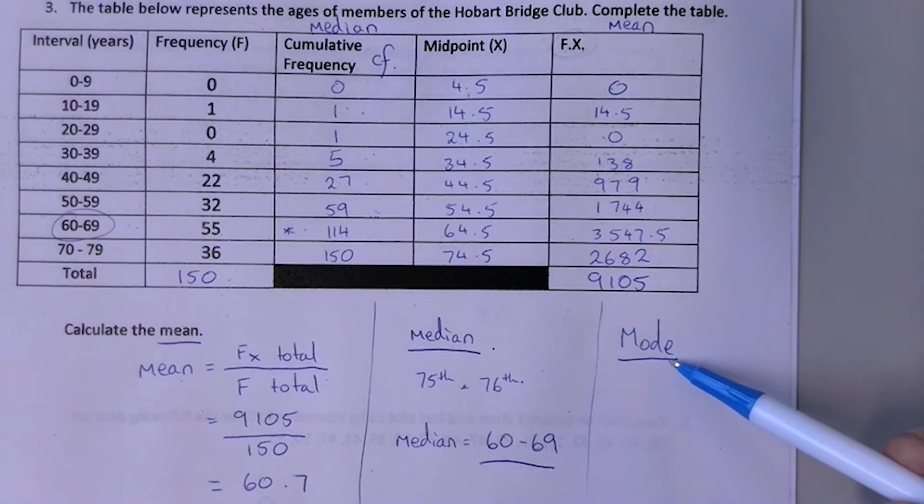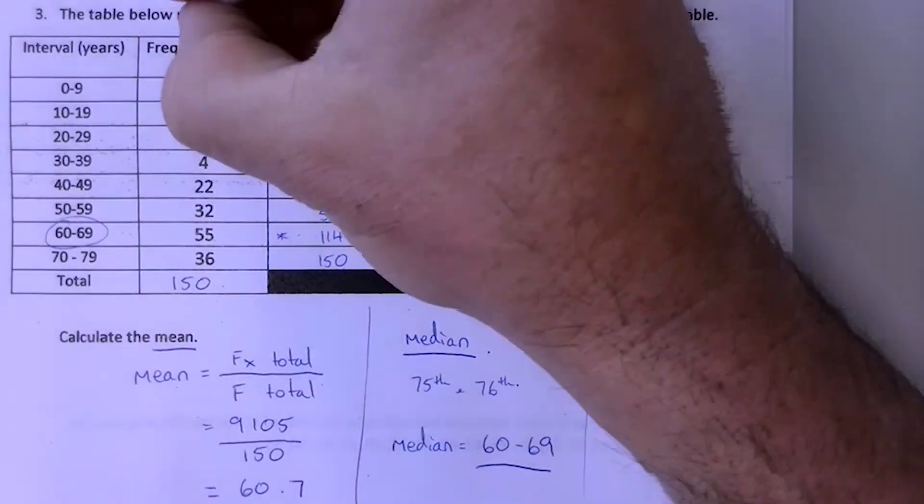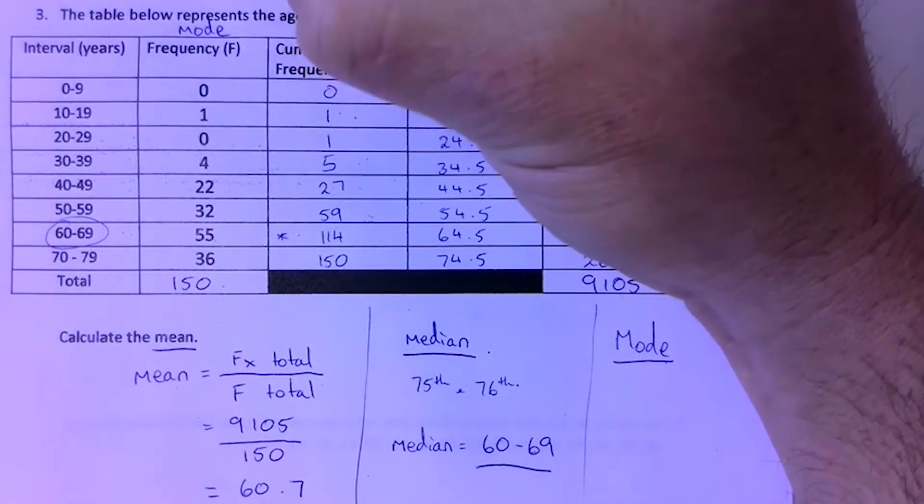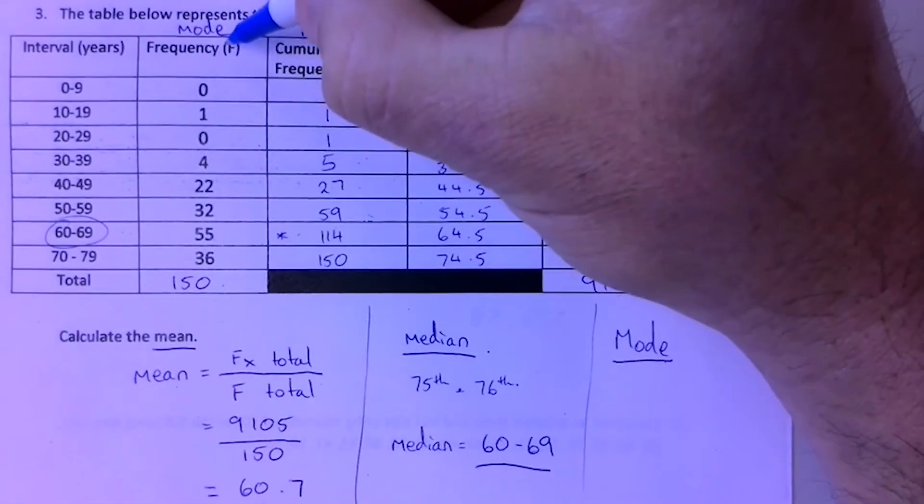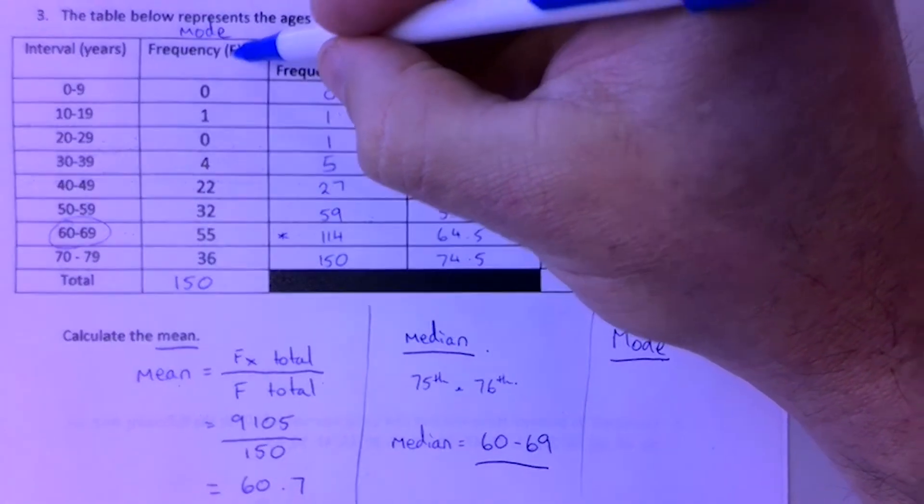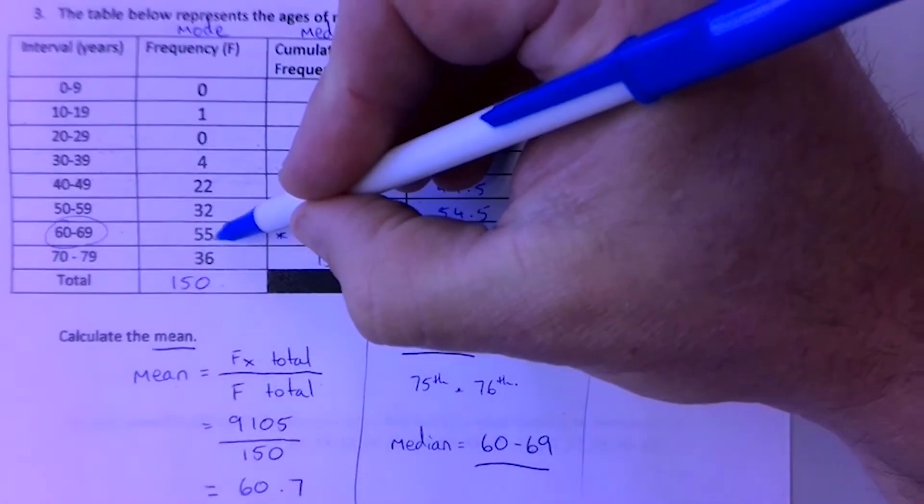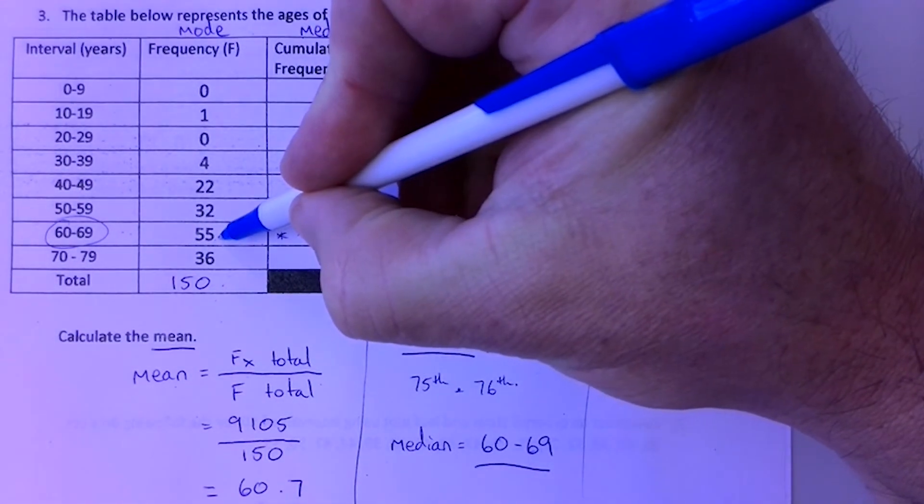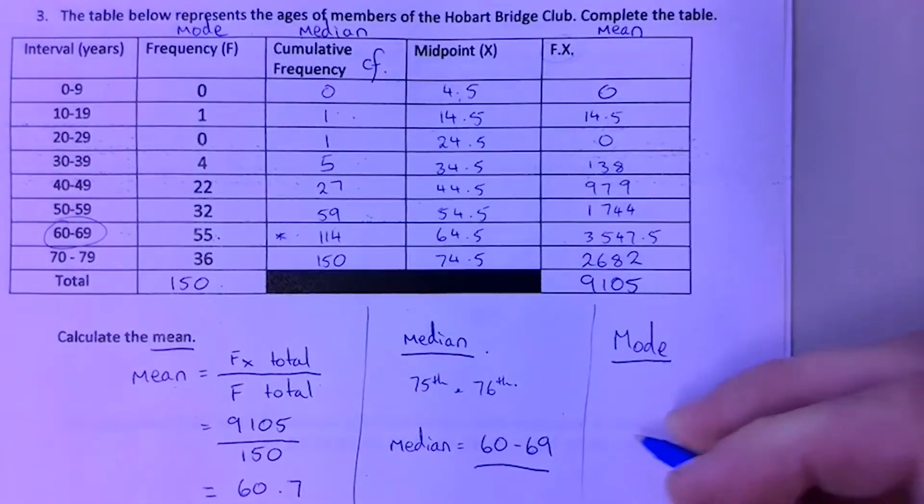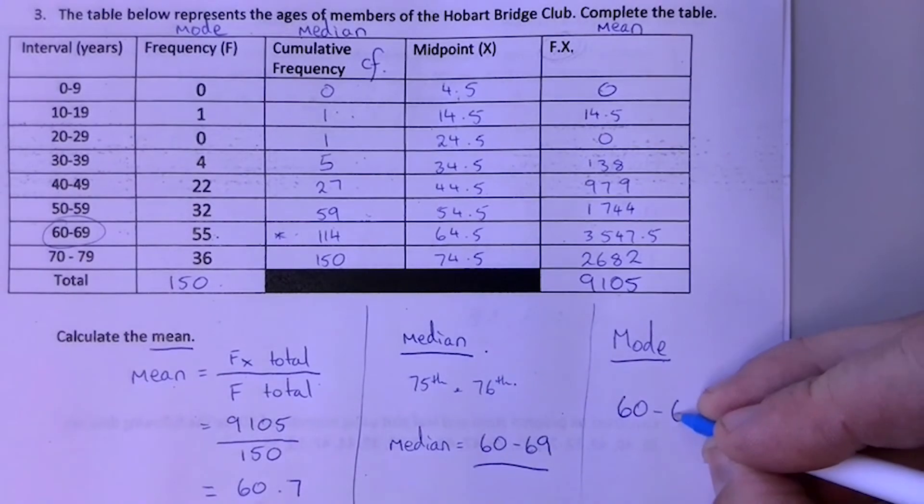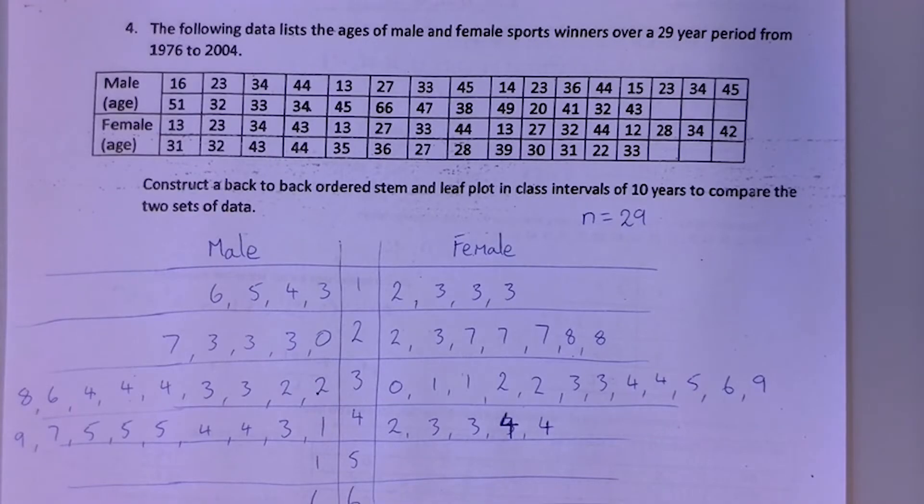And the last part of this question is to try and find the mode. So the mode is best found using the frequency column. So again, make yourself a little note. Because the frequency tells you how often something happens. So that one's nice and easy. All you do is scan down here and find the biggest number. And 55 is the largest number. So that means that this score happened the most times. So the mode is also 60 to 69.